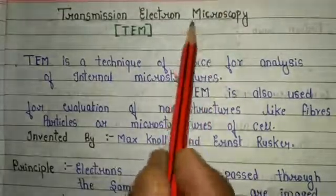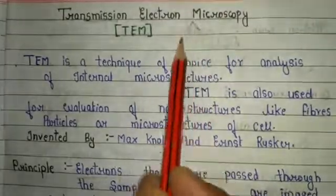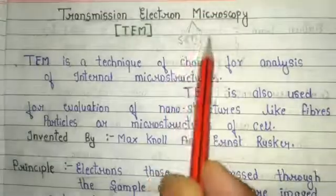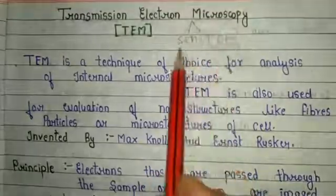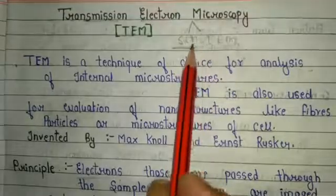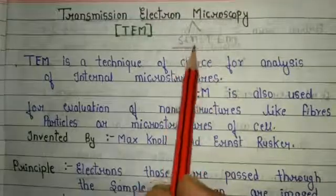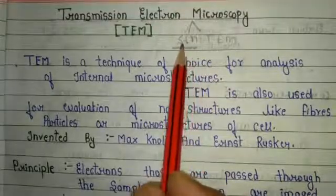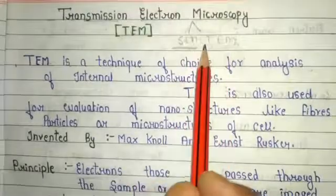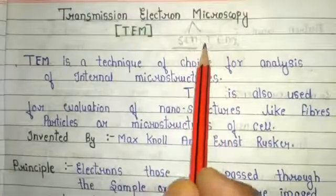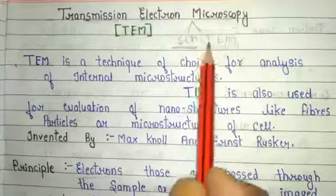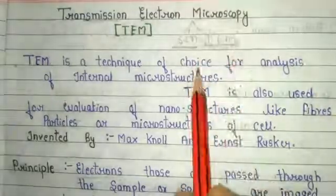Basically, electron microscopy are two types. One is SEM and second is TEM — SEM being scanning electron microscopy. In my previous video, I gave a complete discussion about scanning electron microscopy, and in this particular video, I will give a complete explanation about transmission electron microscopy.